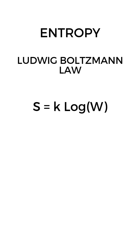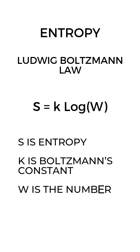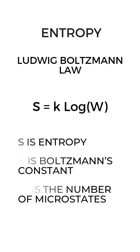According to him, S equals K log W. S is entropy — what we're trying to understand. K is Boltzmann's constant, a bridge between particles and people. W is the number of microstates: all the invisible ways a system can be arranged.